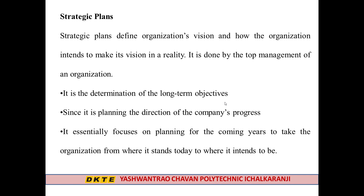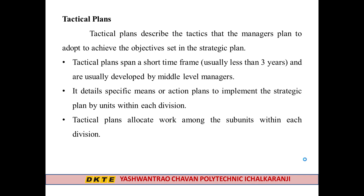Strategic planning is a primary stage where the top management decides the vision of the industry. For example, Tata Motors' vision is to become the topmost automobile industry in the world. To achieve this vision, Tata Motors sets a strategic plan — concentrating on high R&D, good customer service, and improving products.